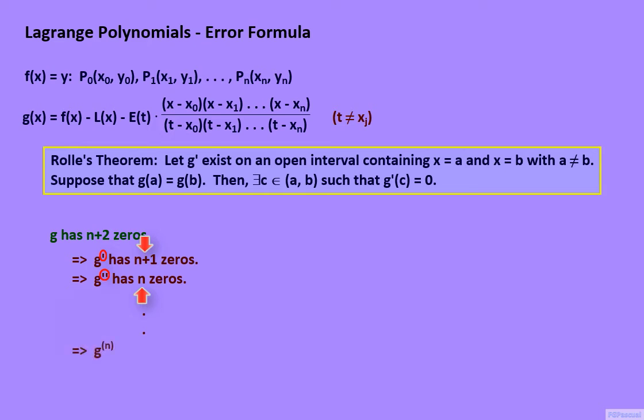Therefore, the nth derivative of g, if it does exist, should have at least two distinct zeros. And finally, if the (n+1)th derivative of g exists, then we are guaranteed at least one zero for the (n+1)th derivative.